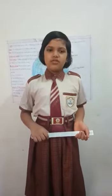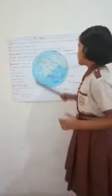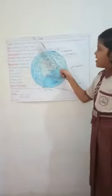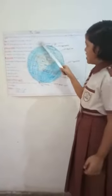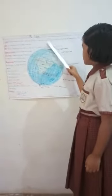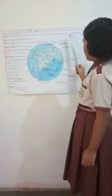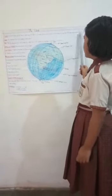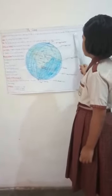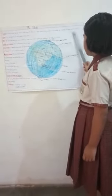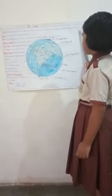Today we will learn about globe. What is globe? Globe is a small model of the Earth. It helps us locate different features of the Earth exactly and accurately, like oceans, continents, seas, etc.